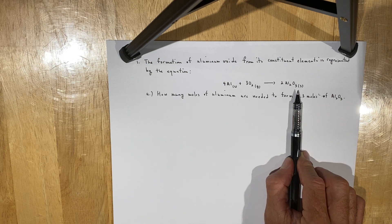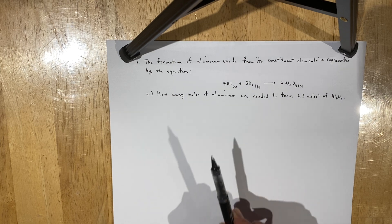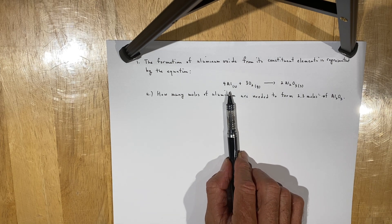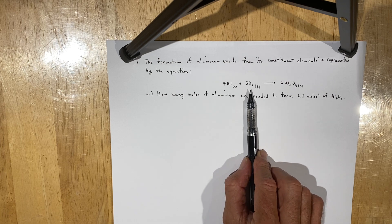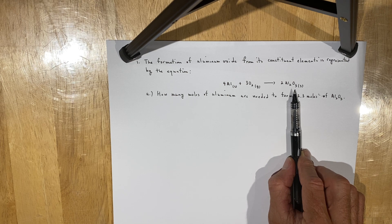If you look at this reaction, it should look familiar to you because it appears to be a direct combination reaction in which a metal, aluminum, reacts with a non-metal, oxygen, to produce a solid formula unit, Al₂O₃, which is held together by ionic bonds.